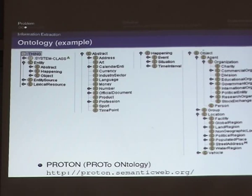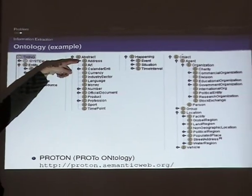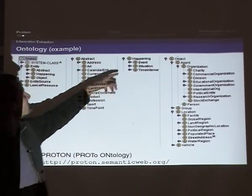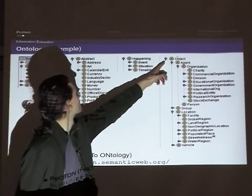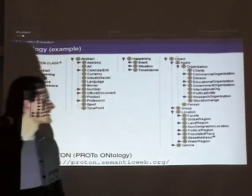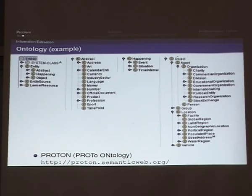Here is an example of an ontology — the Proton ontology — which is basically a class hierarchy. We usually start from something like 'entity', then there are abstract objects like address or number, happenings, situations, and time intervals. There is also an object class which can be an agent, organization, person, group, or location. Besides the class hierarchy, there are instances — the actual data described in terms of ontology classes — and relations between instances.